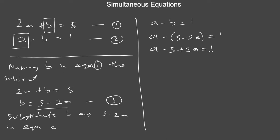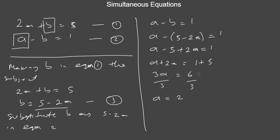Now we collect like terms. We take a plus 2a on one side and transfer the minus 5 to the other side, giving 1 plus 5. So a plus 2a gives 3a, and 1 plus 5 gives 6. Dividing both sides by 3 gives a equals 2. We've got the value of a as 2, and we call this equation 4.